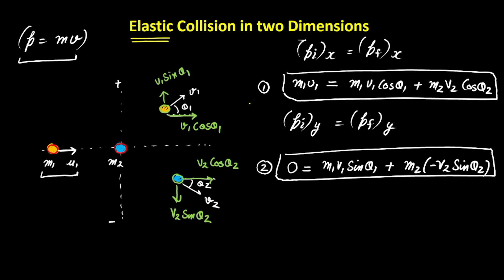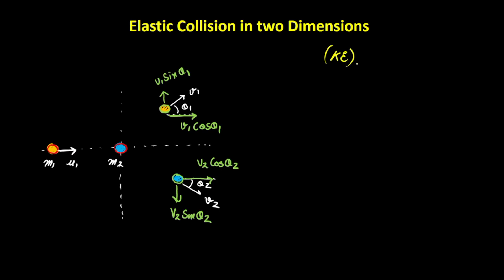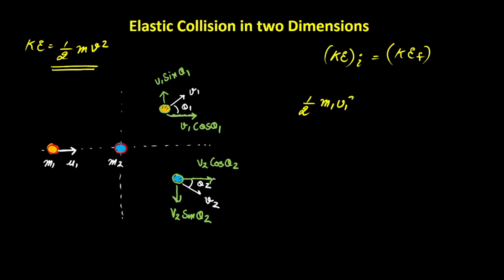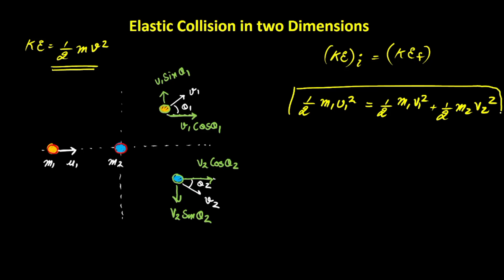Since the collision is elastic, the kinetic energy is also conserved. The formula for kinetic energy is ½mv². We don't need to split velocity into components since kinetic energy is a scalar. The initial kinetic energy is ½·m1·u1², and the second object contributes 0 since it is at rest. This equals ½·m1·v1² plus ½·m2·v2², giving us the third equation.